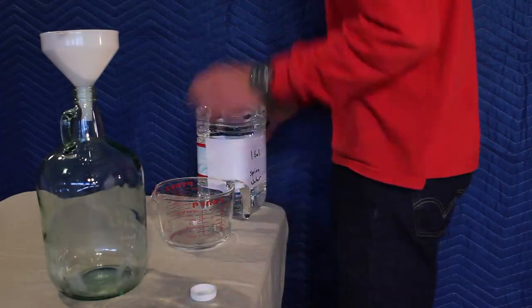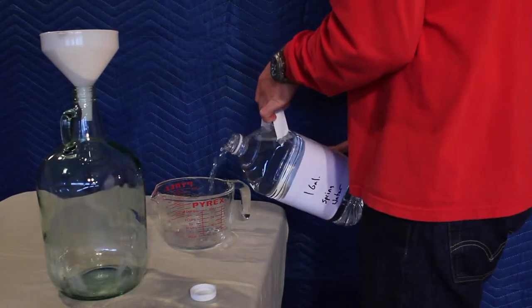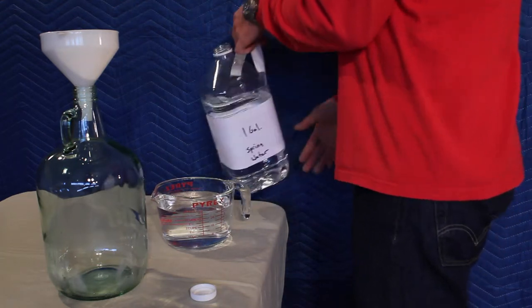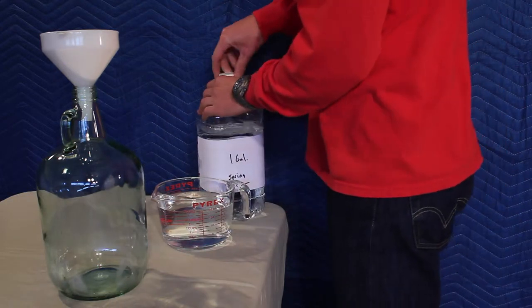Now we are going to divide up the water. One quart is going to go in the carboy, two quarts is going to be used for our honey mixture, and the leftovers will be used to top off our mead.